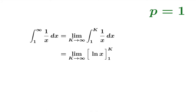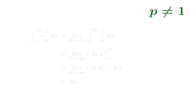The antiderivative is ln of x. We evaluate it from 1 to k and subtract, but the limiting value of ln of k is infinity. This integral diverges to infinity, and that takes care of the case p equals 1.